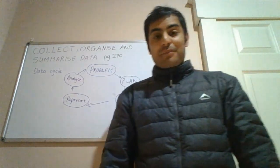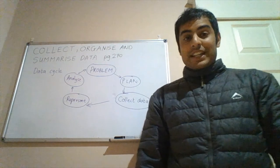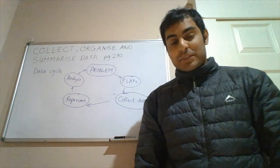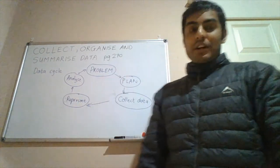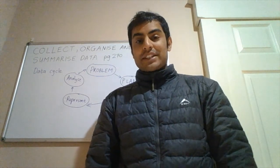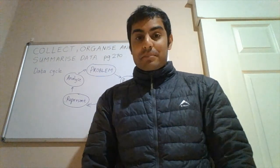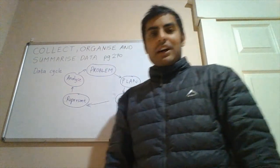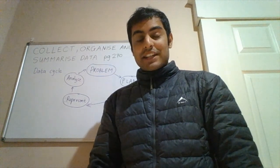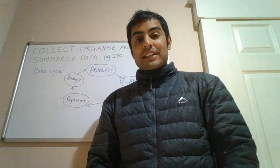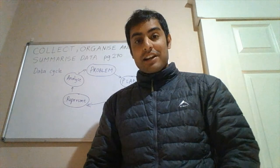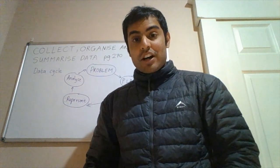So we start off by looking at the data cycle. The data cycle is a process that we follow when statistically trying to analyze a particular problem. So we start off with our problem. For example, we might be interested in how smoking by pregnant mothers might affect their unborn child. We have a plan. How are we going to measure the impact on the unborn child? Would we look at its weight at birth? For example, an unhealthier baby might weigh less than a healthy baby? Would we look at a factor like heart rate? Maybe the smoking impacts the heart rate of the unborn?